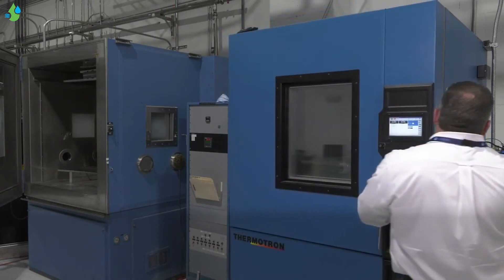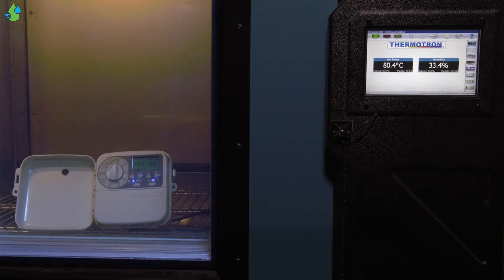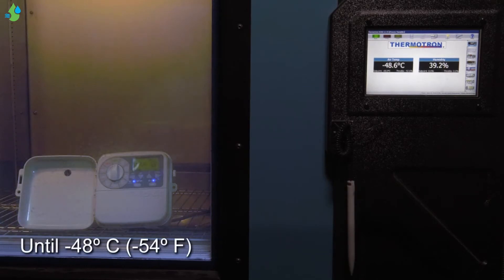A solenoid and pump remain outside of the chamber to monitor activity. The temperature begins at room temperature and is decreased by 5 degrees every 20 minutes until it reaches negative 48 degrees centigrade, negative 54 degrees Fahrenheit.